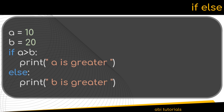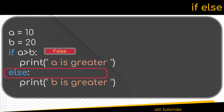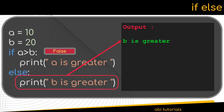Now we are going to look into the if-else statement. Similar to the previous example, we have two variables a and b with values 10 and 20 respectively. The if statement checks whether a is greater than b, but it returns false since b is greater here. So the statement within the if block is not executed and the statement flow goes to the else statement, and the statement within the else block is printed.